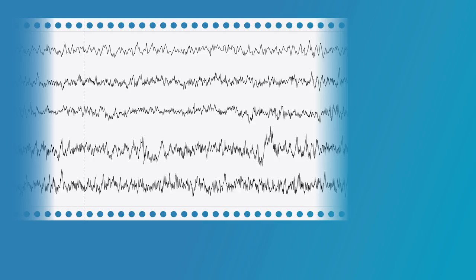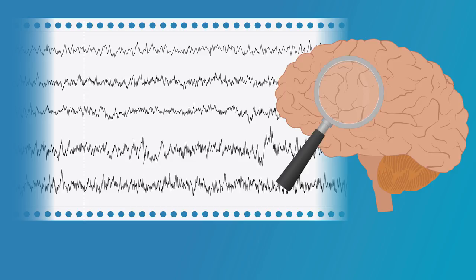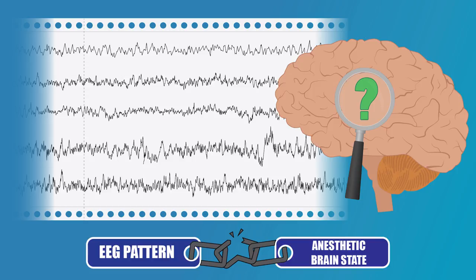At that time, the approach to reading the EEG was to look at the electrical waveforms and decipher what the specific patterns meant given the clinical context. Unfortunately, this approach to reading the unprocessed EEG never caught on as a standard practice in anesthesiology, perhaps because the mechanisms and relationships to anesthetic brain states were unclear.